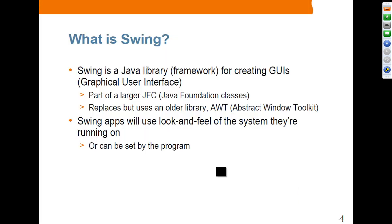What is Swing? Swing is a Java library — you can call it a framework as well — but it is basically a Java library for creating graphical user interfaces. It's part of the larger JFC, Java Foundation Classes, but it replaces the old library called AWT. Nobody is using AWT right now, but in the beginning of Java there was AWT, and then Swing replaced it.